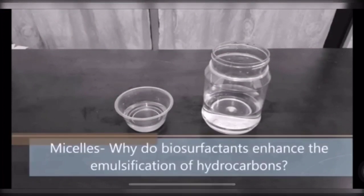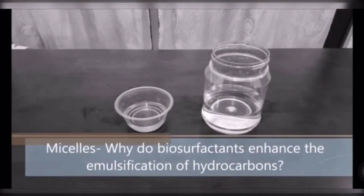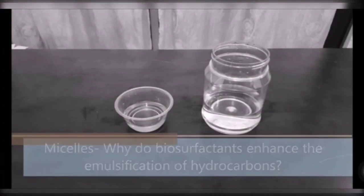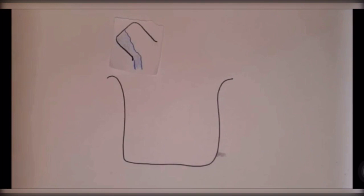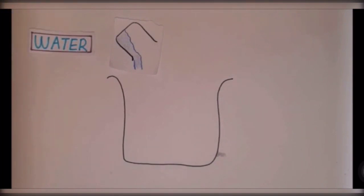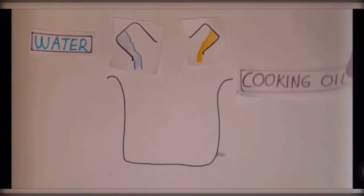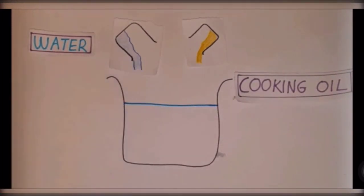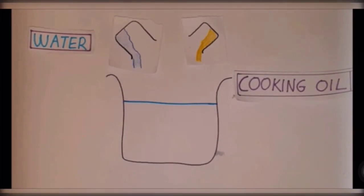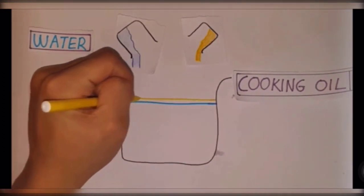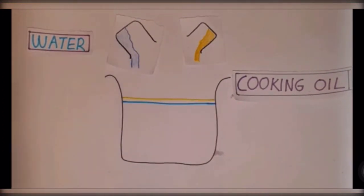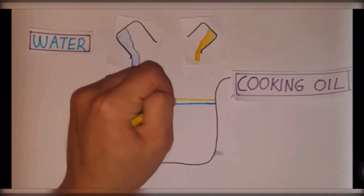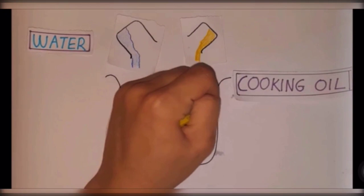Now performing our first home experiment, which is the oil and water experiment. We will see how surfactants affect the emulsification of hydrocarbons. Ever since we were kids, we have been taught that when you pour water and oil together they will never mix — that is, water and oil are immiscible. Here is an example of the same.